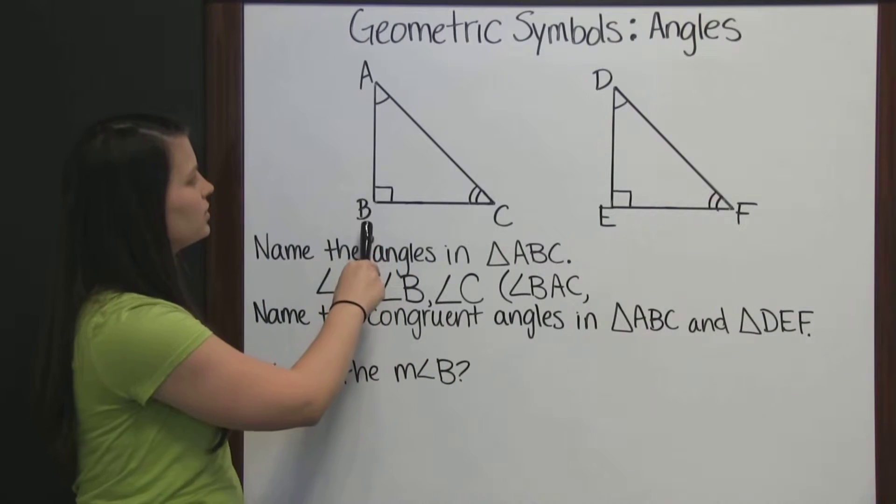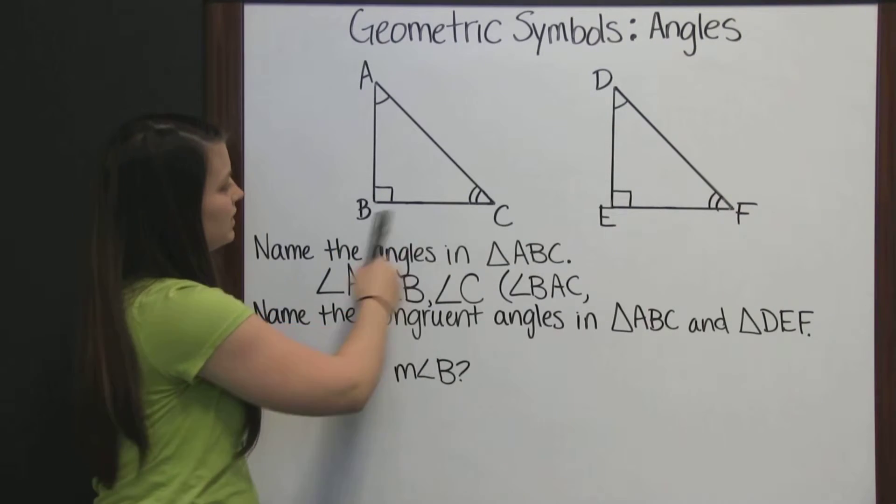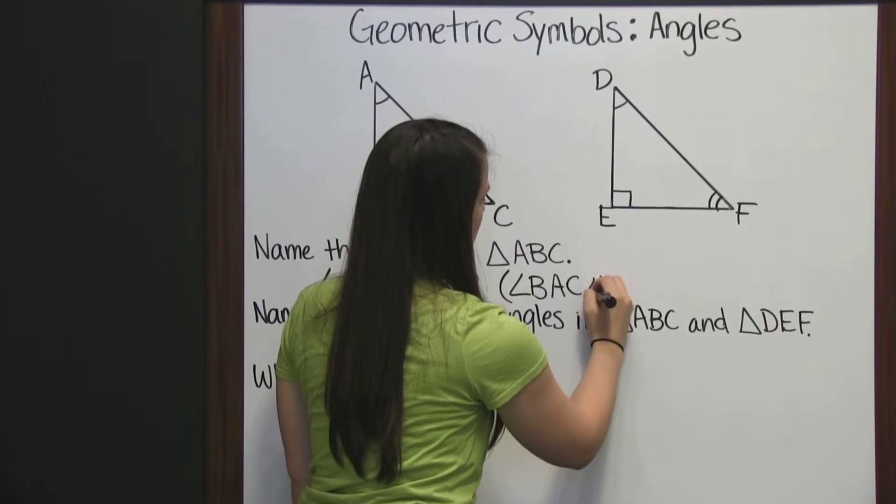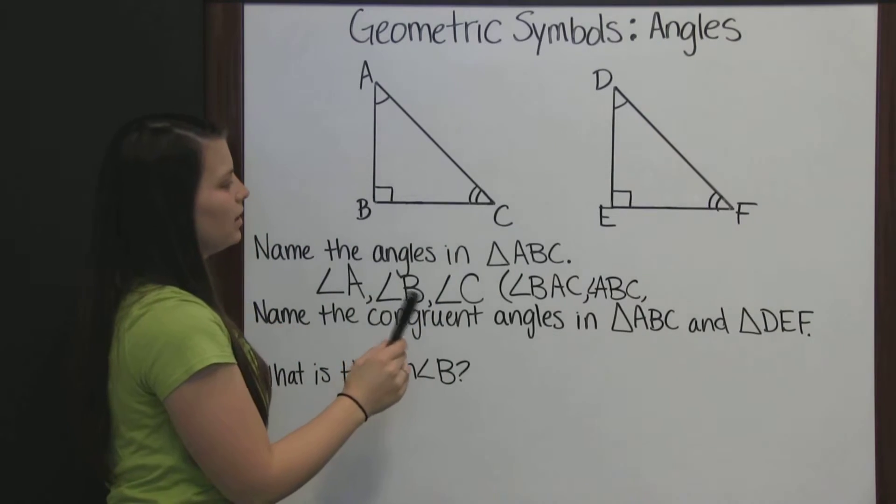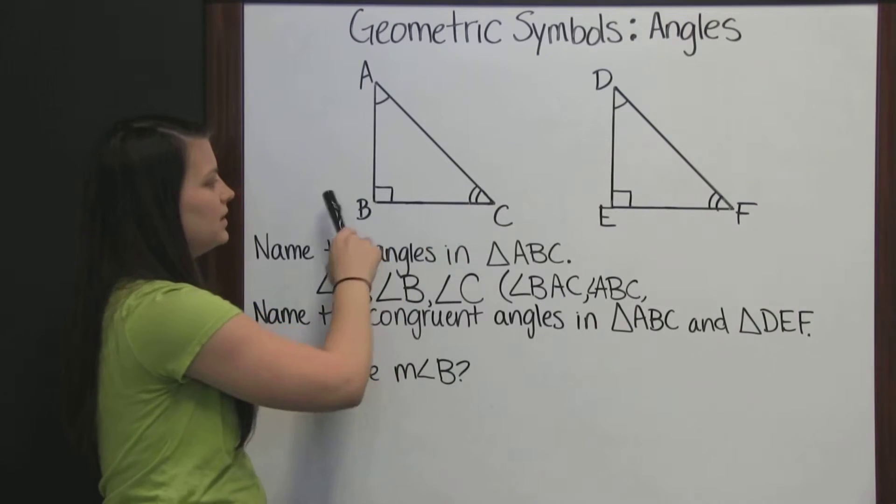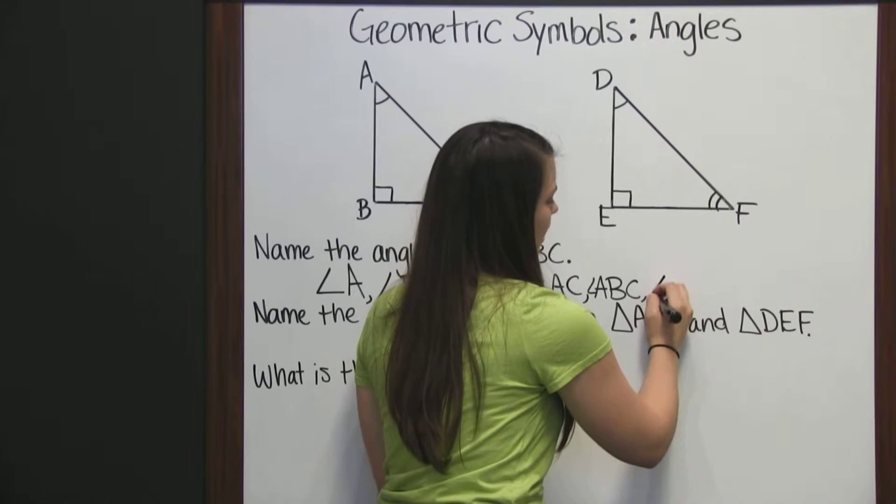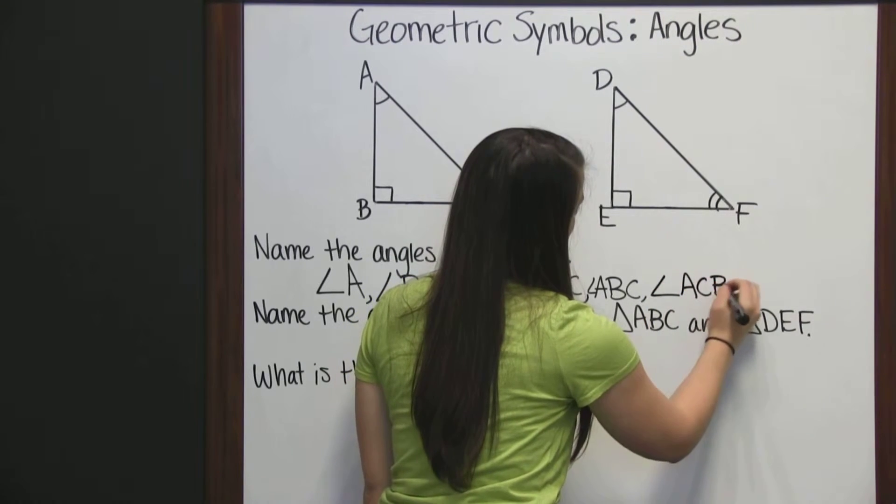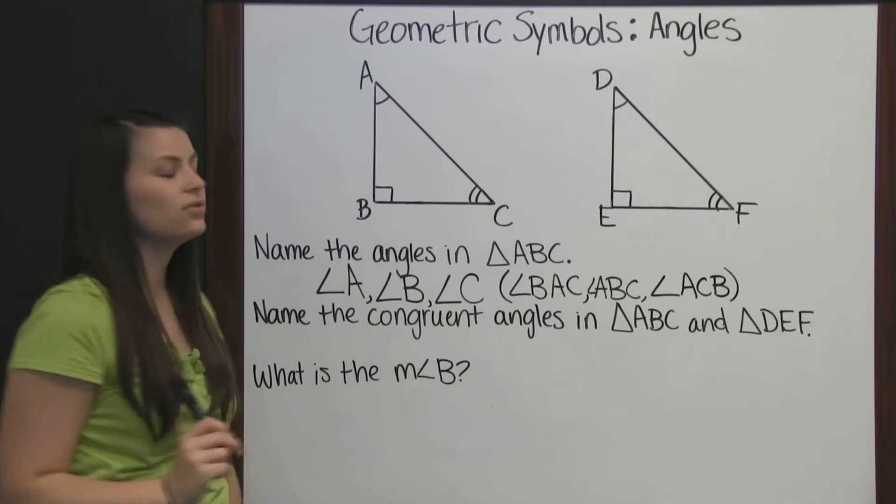To name angle B, we could also call it angle ABC or angle CBA, as long as B stays in the middle. And angle C can be called angle BCA or angle ACB. Again, that vertex needs to be the middle letter. So we start with our angle symbol, angle ACB. There are two different ways to name angles, both using the angle symbol.